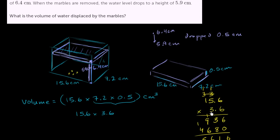Now, if this was 156 times 36, this would be 5,616. But it's not. We have two numbers to the right of the decimal point, one, two. So it's going to be 56.16. So the volume, and we deserve a drum roll now, is 56.16 cubic centimeters.